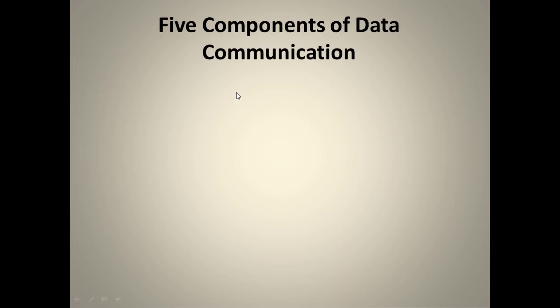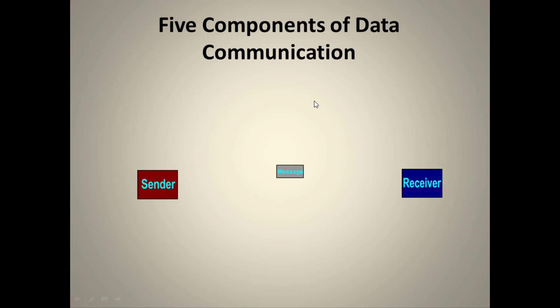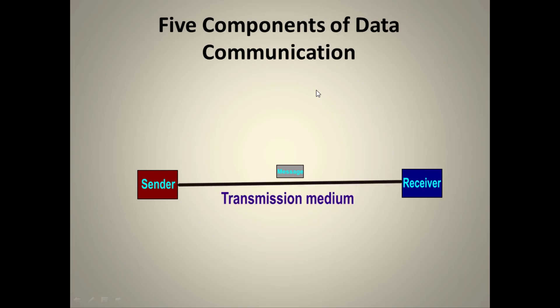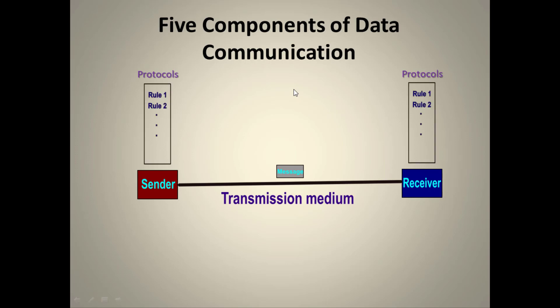There are five components of data communication. The first is the message, which can be text, a number, audio, video, or a picture. Second is the sender who sends the message. Third is the receiver who receives it. Fourth is the transmission medium — either wired or wireless. Fifth are protocols, which are a set of rules governing proper communication.